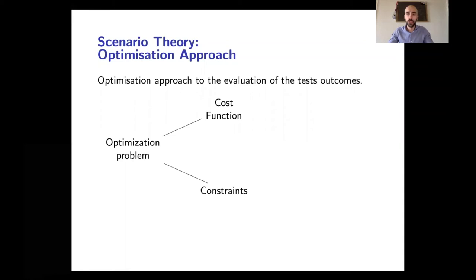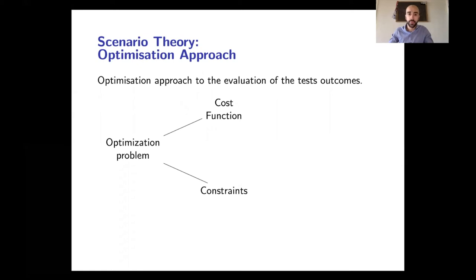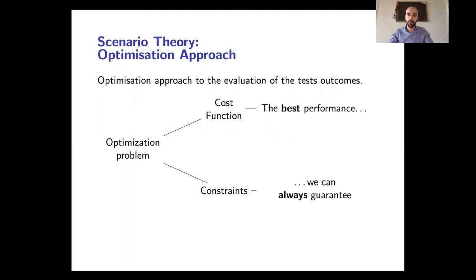Let's see how to apply scenario theory to our testing problem. To do so, we need to formulate the testing problem as an optimization problem — more specifically, as the robust solution of an uncertain optimization problem. An optimization problem is composed of a cost function we want to maximize or optimize, and some constraints — limits on the decisions we can take. In our testing problem, we want to find the best performance we can guarantee given the specific realization of our system.